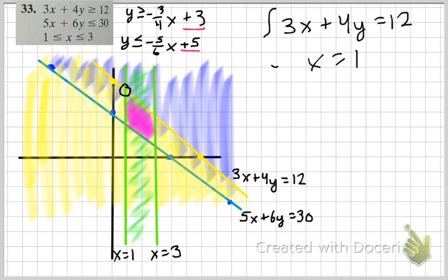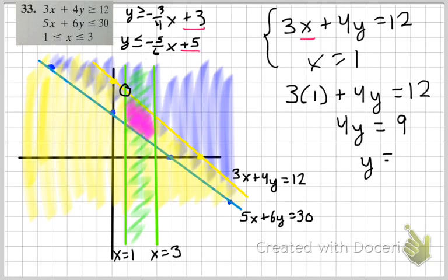So this is my system of equations. So since we already know what x is, I'm just going to plug that in to find my y value. So I get y equals 9 over 4. So there's my x and my y value. So for this point, my coordinate is 1, 9 over 4.